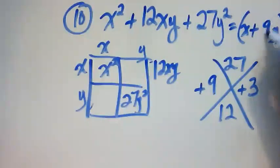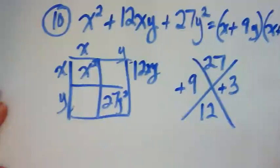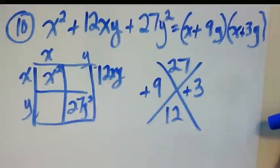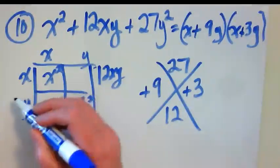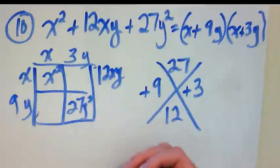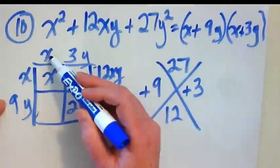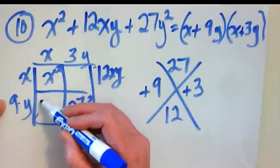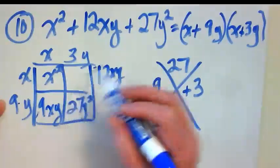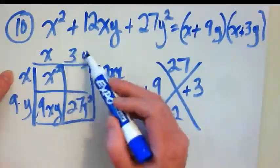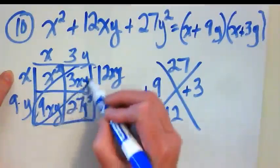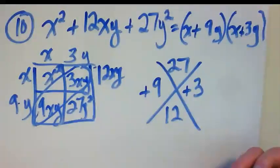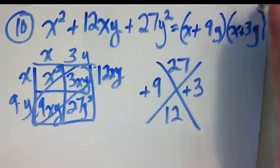So I think that this is x plus 9y and x plus 3y. Sorry, that's off the screen a little bit. And I'm going to come over here to my box and I'm going to see if it works. 9y, 3y. X times 9y is going to give me 9xy. 3y times x is going to give me 3xy. Do those two together equal 12xy and they do. So this is my solution.